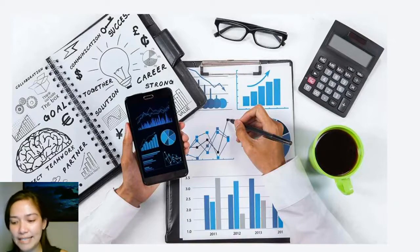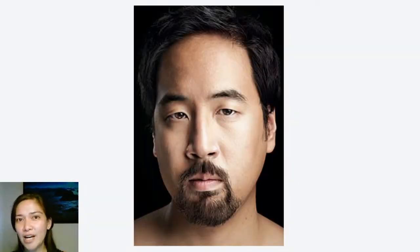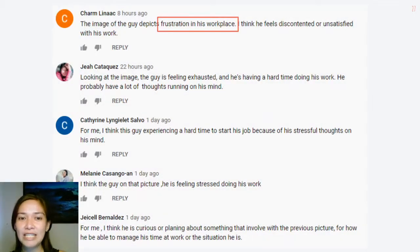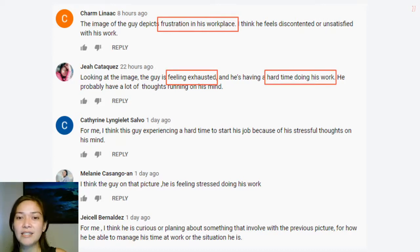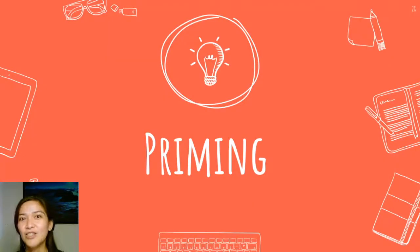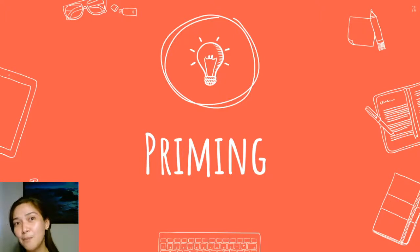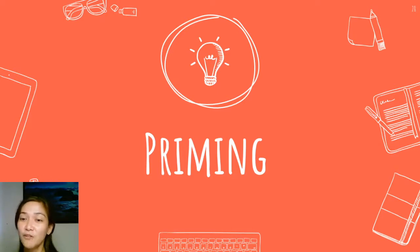With another set of images shown beforehand, when I asked what the guy is feeling or thinking, most answers were related to the previous images — frustration in his workplace, feeling exhausted, hard time doing his work, stressful thoughts, feeling stressed, hard time managing time at work. What I showed you is something that has to do with priming — whatever thoughts you had beforehand, whatever you've seen or heard, they actually prime you into thinking about something else.